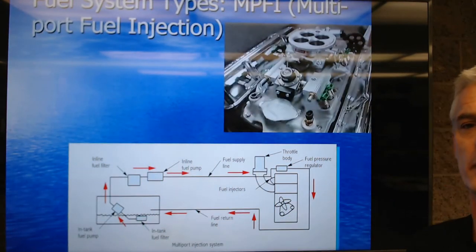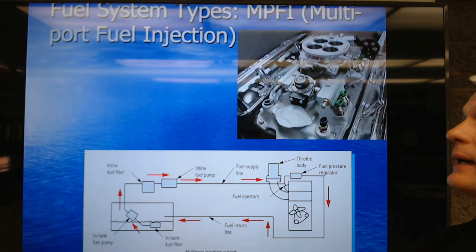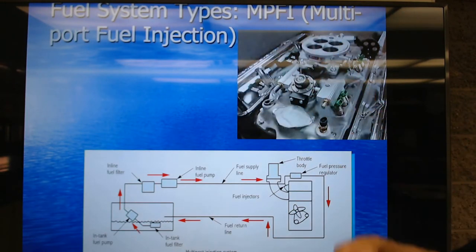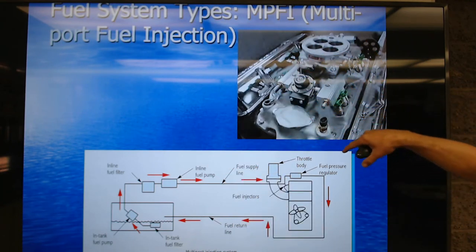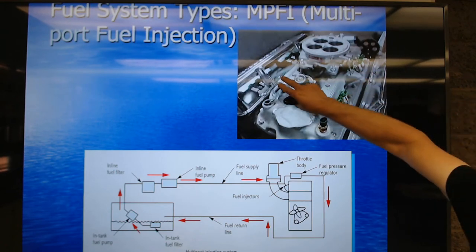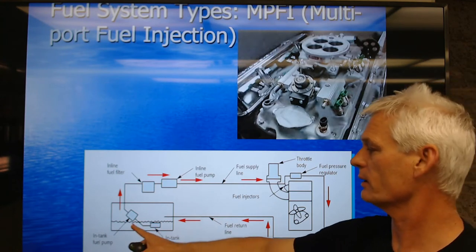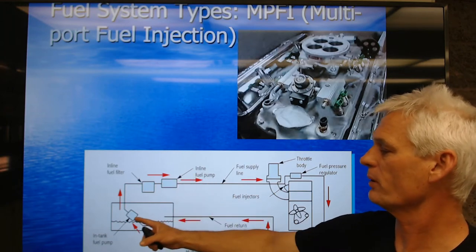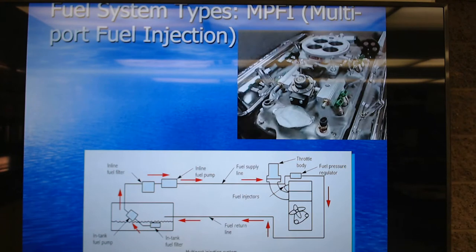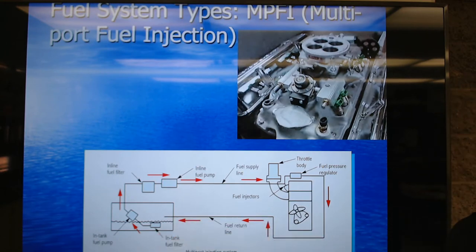For MPFI — multi-port fuel injection — we have more than one injector: one, two, three, four, et cetera. Here's an aftermarket unit with eight injectors pointing at the back of the intake on a four-barrel throttle body. We still have a fuel sock, in-tank pump, and inline fuel filter. We usually have one or the other — either an inline pump or an in-tank pump, not both. We send fuel up to the injectors and dump excess fuel pressure back to the tank.